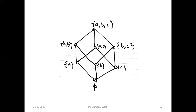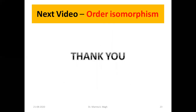So this is all for today's video. We have seen the definition of a partially ordered set, totally ordered set, some examples of partially ordered sets, and how to draw the Hasse diagram of a partially ordered set. In the next video we are going to talk about order isomorphism — when we have two partially ordered sets, when do we say these two sets are isomorphic to each other? Thank you.